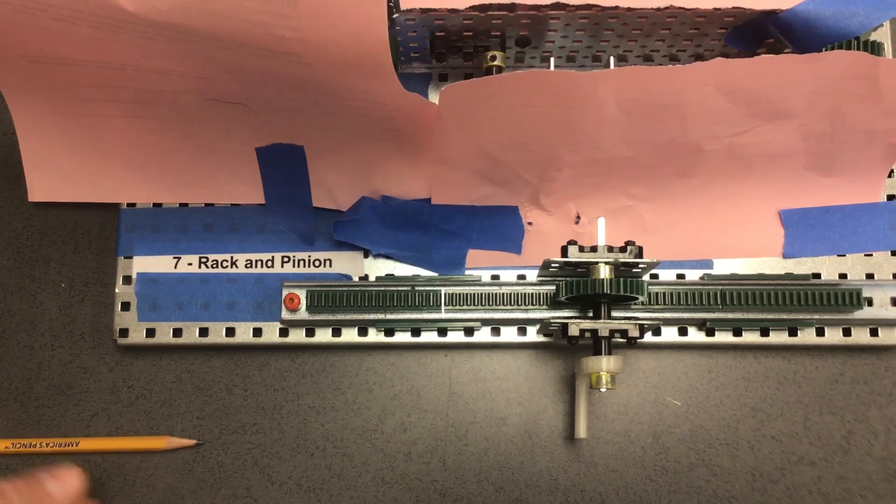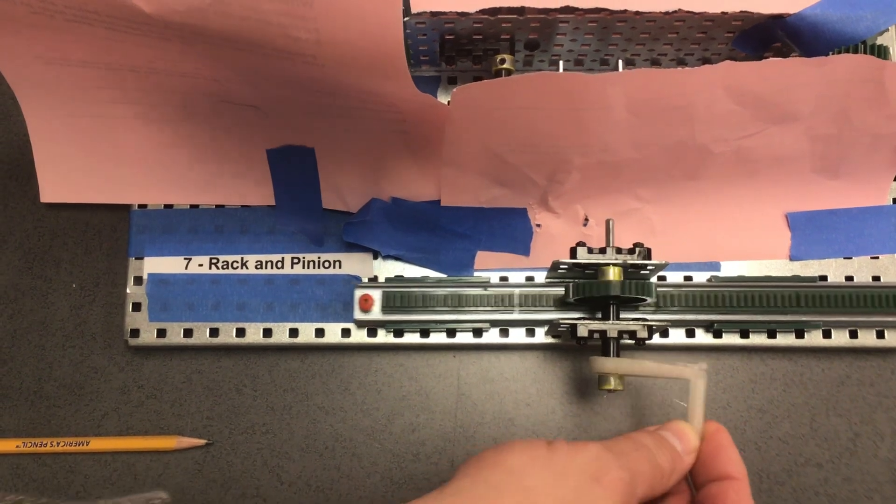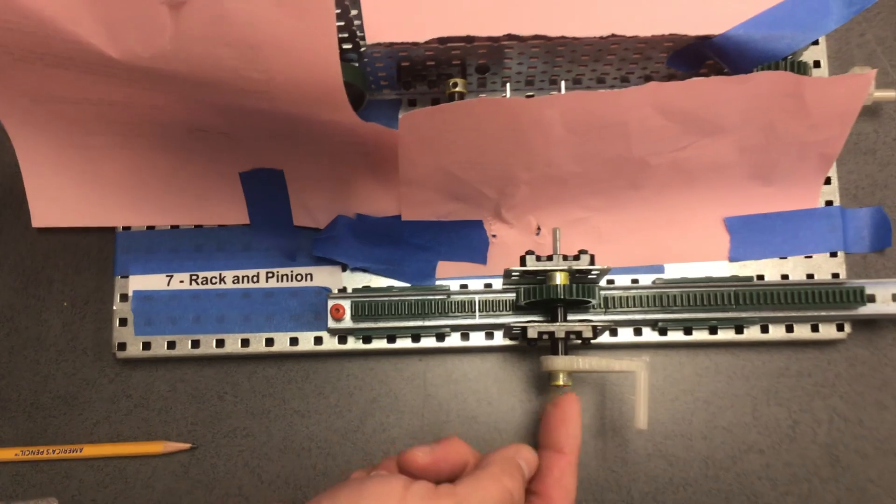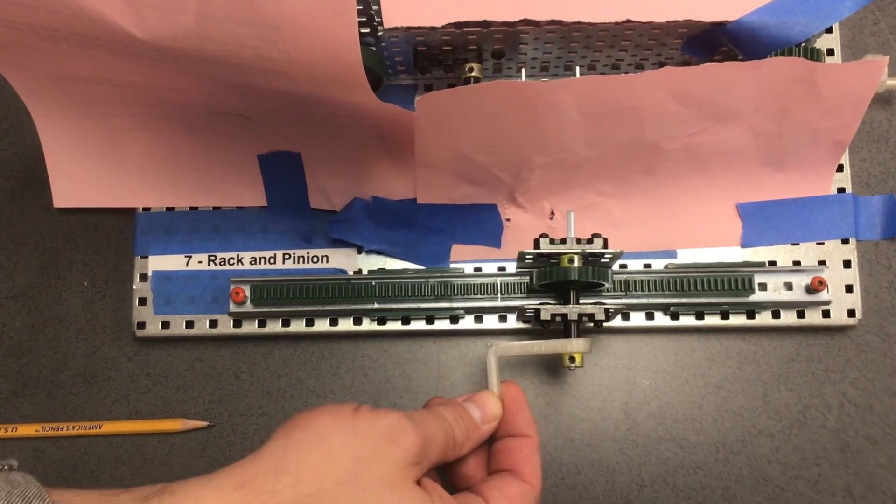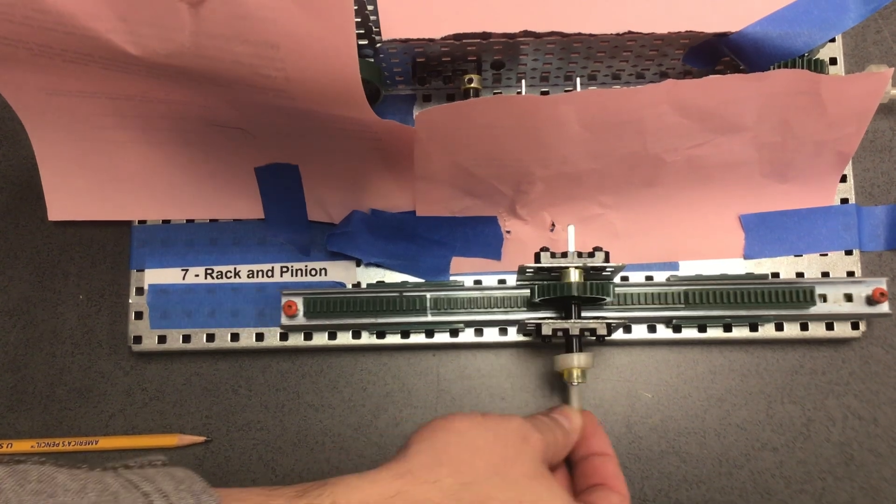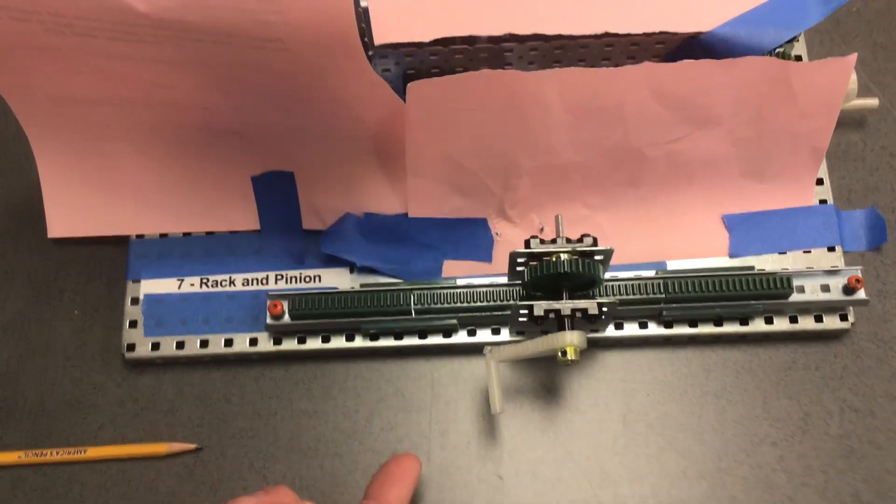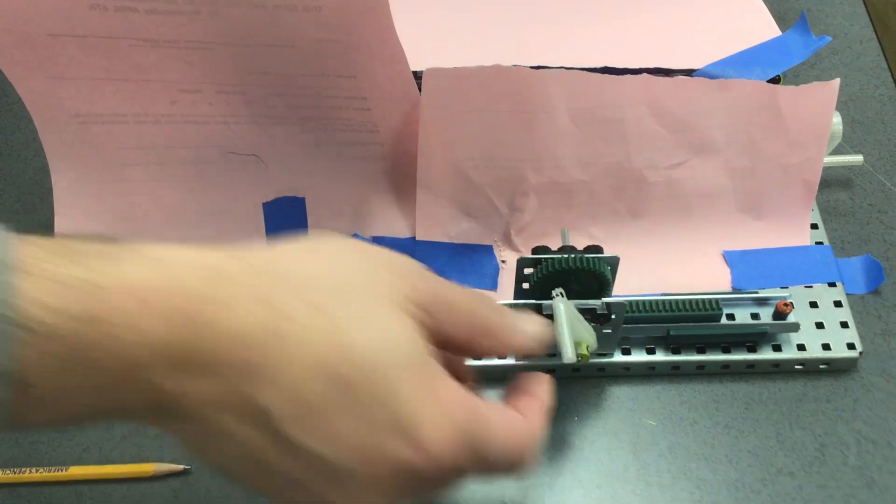Let's talk about the movement. For the rack and pinion gear, you simply turn or add your input right here to the pinion gear and it will simply move the rack. The type of movement on the pinion is rotary. The type of movement on the rack is linear.